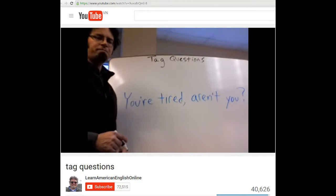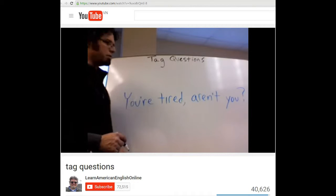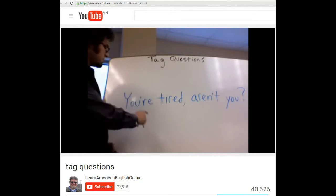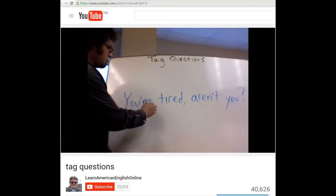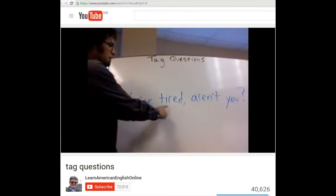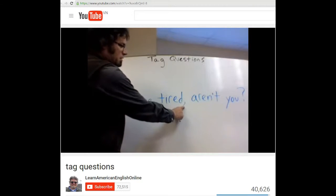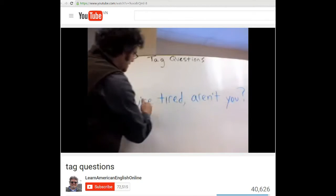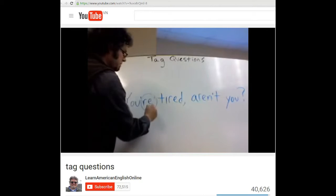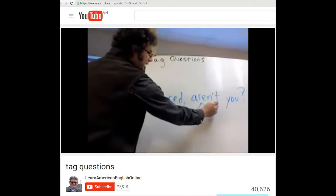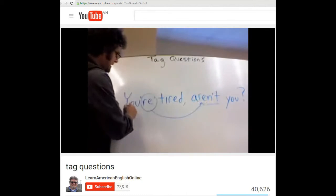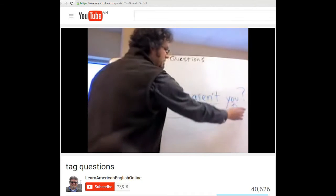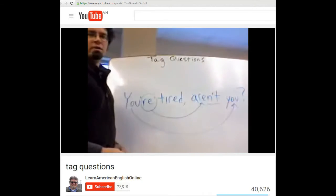In this example, you're tired, aren't you? The subject is you. The main verb is the verb be. Tired, aren't you? Here's the verb be repeated here and it's negative and the subject is repeated at the end and then there's a question mark.